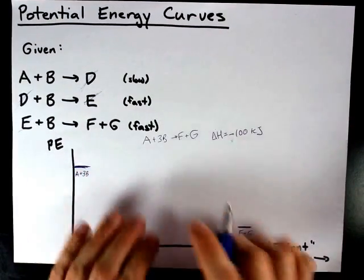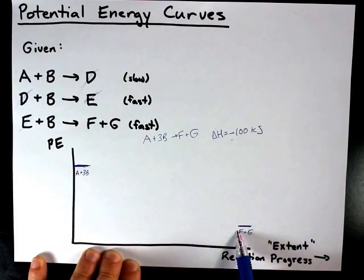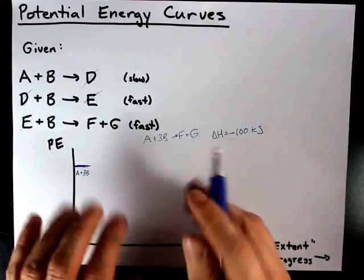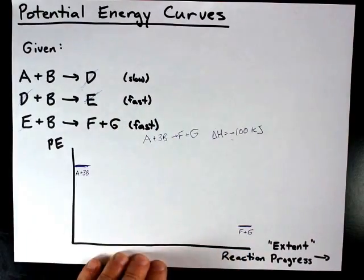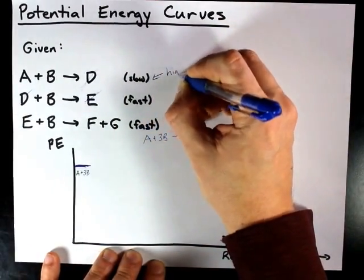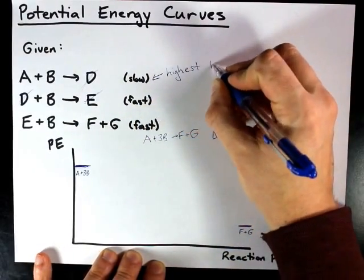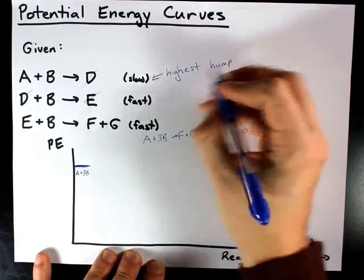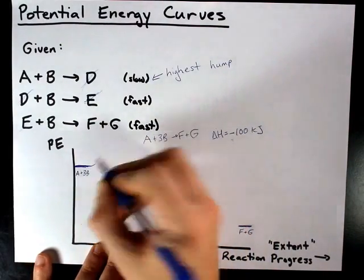Now, a potential energy curve shows humps for each step of the reaction. And what really matters, if you weren't given the delta H for each step itself, is that the slowest step of the reaction, the slowest elementary step, has the highest hump. It's controlling the activation energy for the reaction.